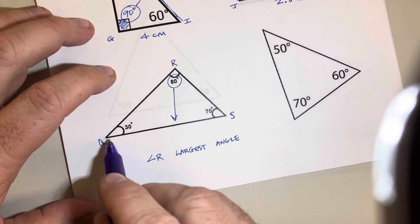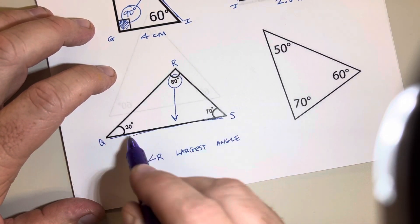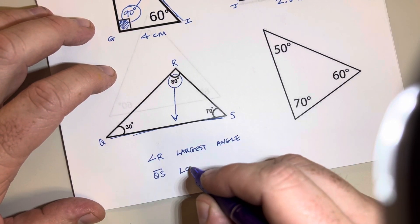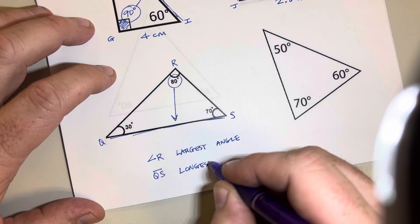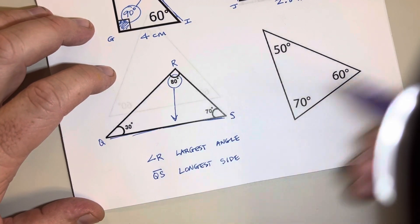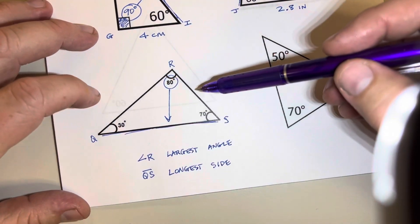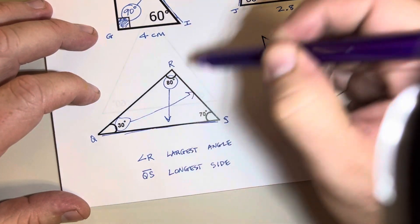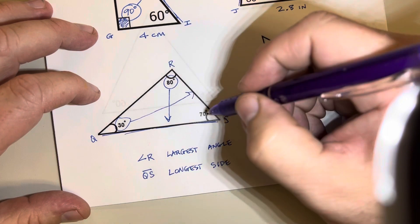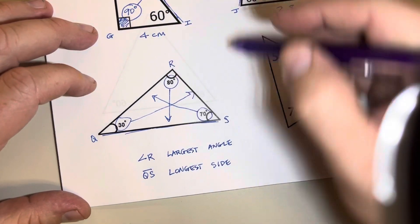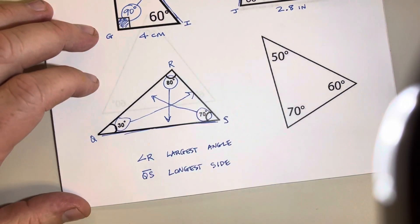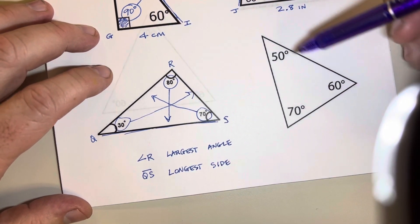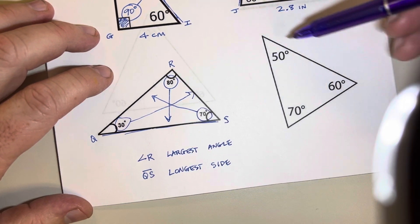So that means that it's across from line QS. So QS, therefore, has to be the longest side. And then again, the smallest would be across from RS. So the smallest angle is across from the smallest side, which is RS. And the middle length angle is across from the middle length side, which is QR. So there's a relationship between the size of the angles on the inside and the length of the sides when we measure each line.